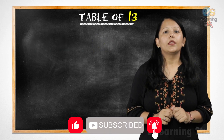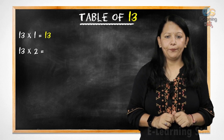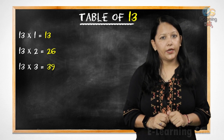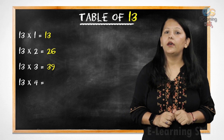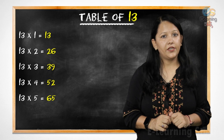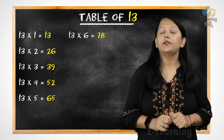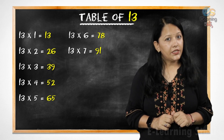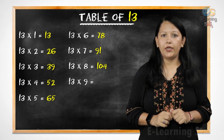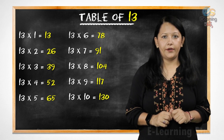Now let's revise it. 13 ones are 13, 13 twos are 26, 13 threes are 39, 13 fours are 52, 13 fives are 65, 13 sixes are 78, 13 sevens are 91, 13 eights are 104, 13 nines are 117, 13 tens are 130.